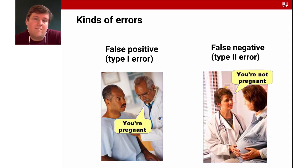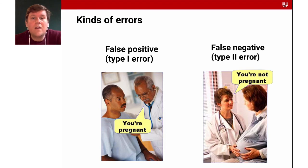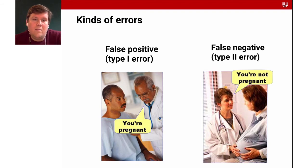Here's another more funny example that makes these errors a bit more obvious. A false positive would be telling a man who can't be pregnant that he is pregnant. A false negative would be telling a person who is pregnant that she is not pregnant. It's important terminology that you need to use a bit until you can really grasp it.